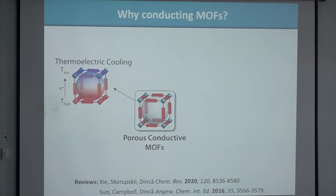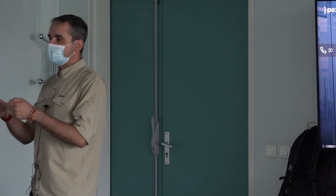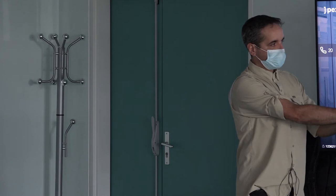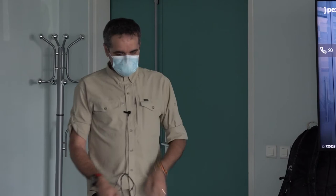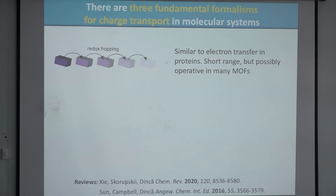Charges want to travel through materials that are dense, with many electronic states close together in energy. But once you have a conductive MOF, you can think about gas separations — a very porous, very conductive material where you apply a potential to modulate the adsorption energy of one component in a mixture and therefore separate the other. There are lots of potential applications: electrocatalysis, ion conductors, and so on.